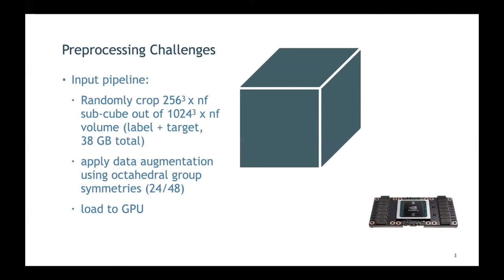3D usually means more memory movement, and that is where the challenge lies. The input data consists of simulation outputs — a big cube of data: a 1024³ grid times the number of features. For the N-body part, the features are density and 3D velocity, and for the target, those plus temperature, giving a total size of 38 gigabytes.